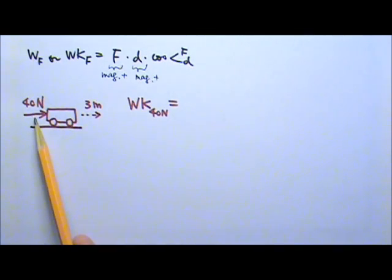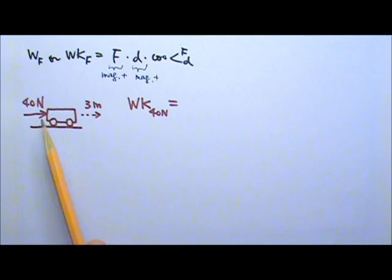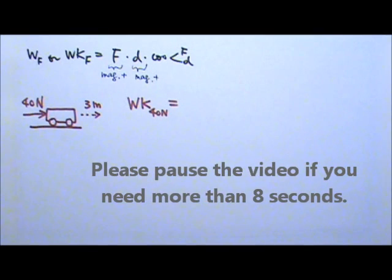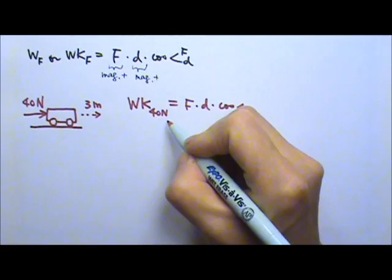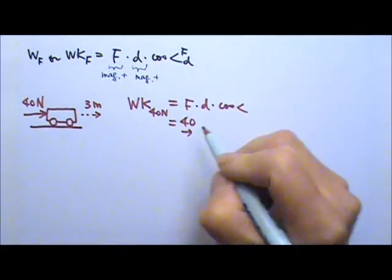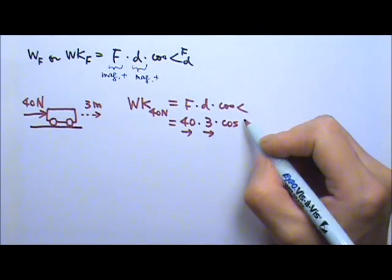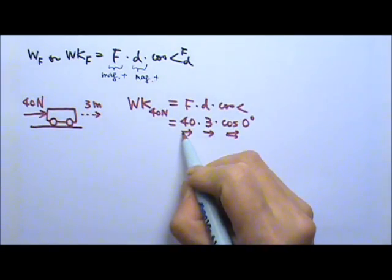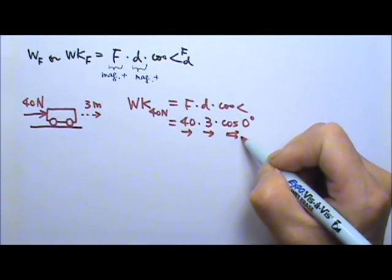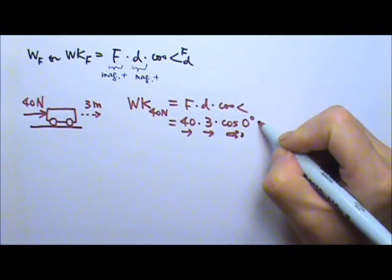For example, a 40N force pushes on a cart horizontally for 3 meters. We're looking for the work done by this 40N force. So this is the force times the displacement times the cosine of the angle between those two. The force is 40N to the right; the displacement is 3 meters to the right. That means the angle between the two is 0 degrees — when we put their tails together, they are in the same direction. So this gives us 120.